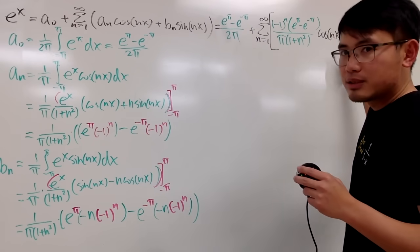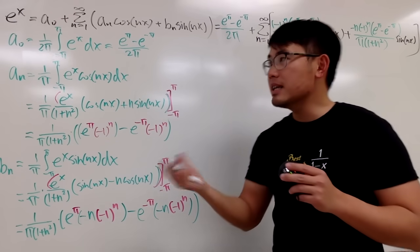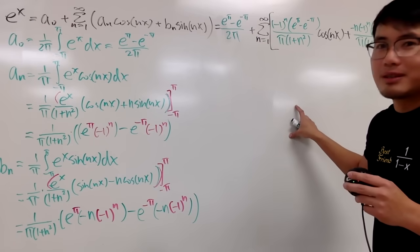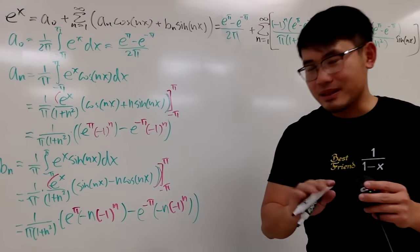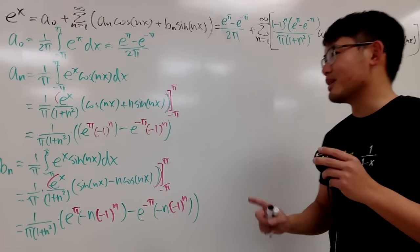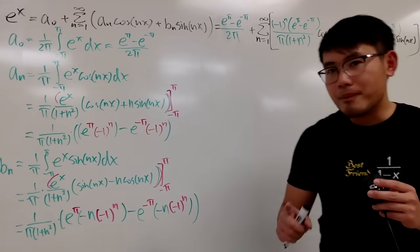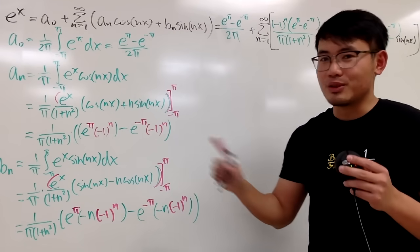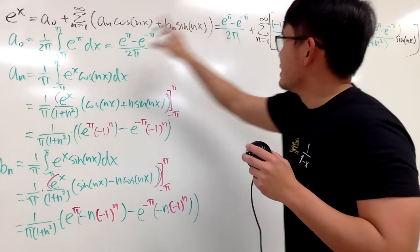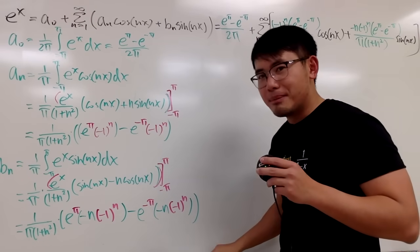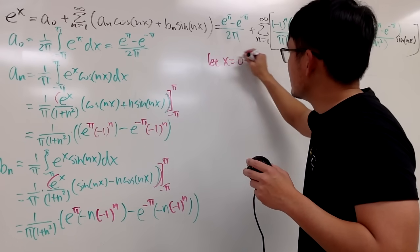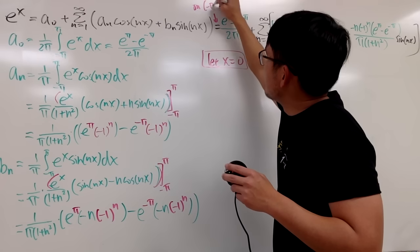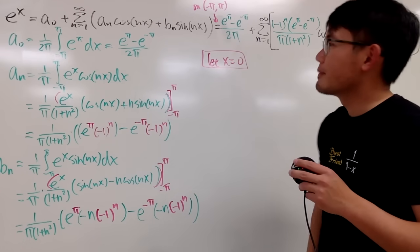You might ask: does this converge at the endpoints, i.e., can you plug in π or −π and make sense of it? It does not converge at the endpoints — you can explore that on your own. However, when x = 0, this converges because zero is in the interior of the interval [−π, π], so it will definitely work.